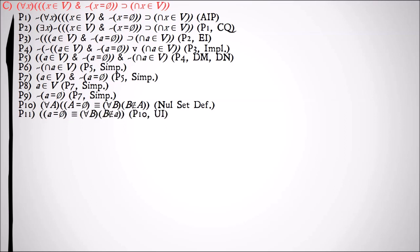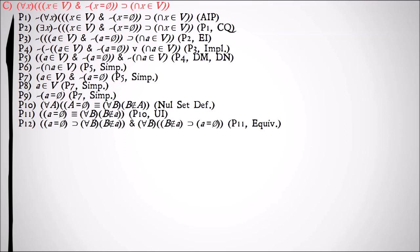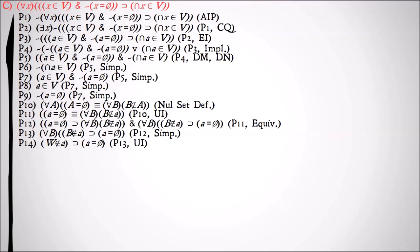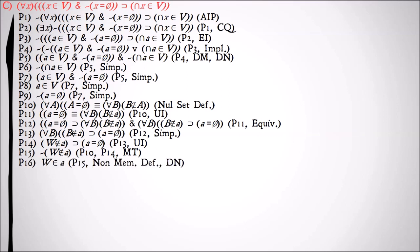Now we'll use our null set definition and universally instantiate that to A, to get: A equals the null set is materially equivalent to for all B, B is not a member of A. The reason we're doing this is so that we can use modus tollens in a few steps to show that A in fact has some member. So we'll split up our material equivalence into two implications, simplify, then use universal instantiation — instantiating B to W, remembering it was a universal variable — and use modus tollens to show it's not the case that W is not a member of A. Using our non-membership definition and double negation, W is a member of A.